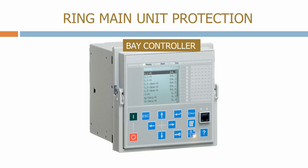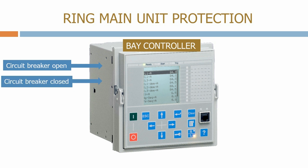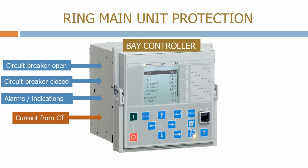It's a multi-function device. From an RMU, the signals we will typically get are circuit breaker open, circuit breaker closed, and alarms and indications. These may include a low gas or pressure alarm. Next, we pick up the magnitude of the current from the current transformer located on the RMU. This is essential for the controller to provide all the necessary protection functions and provide an indication of the current back to the remote end.